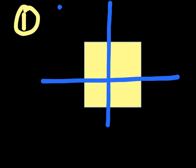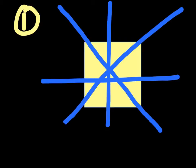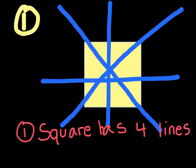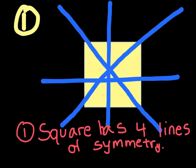Let's start off with our first shape: the square. The square has a few rules, so I'm going to draw those out. The square has four lines of symmetry — these blue lines are the lines of symmetry. So the rule is: a square has four lines of symmetry. That's all you need to know for a square.